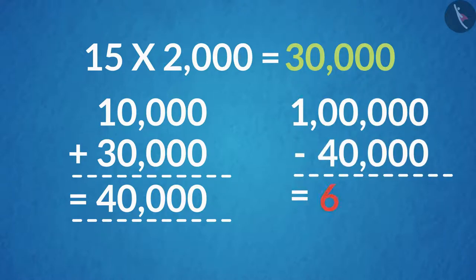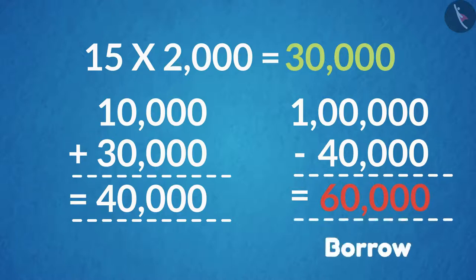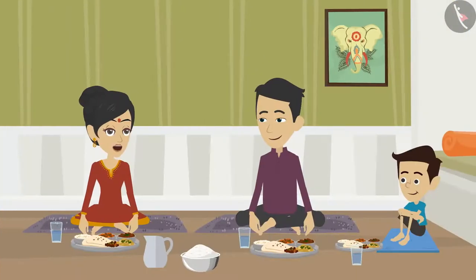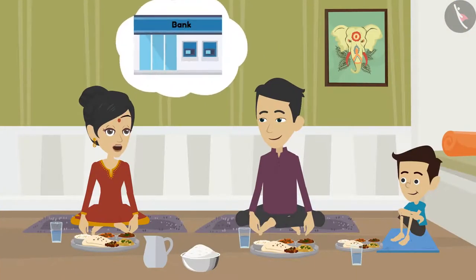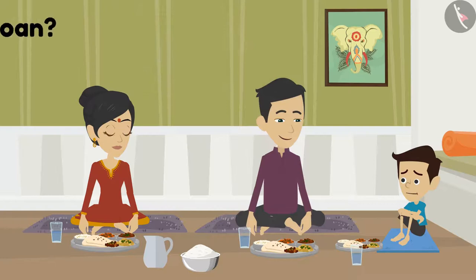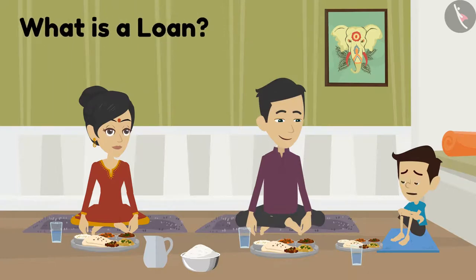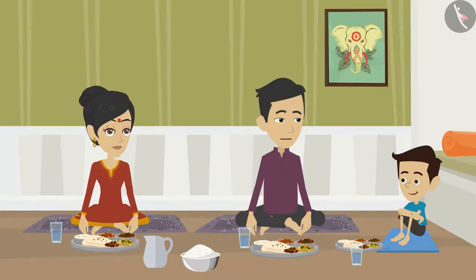That means we have to borrow 60,000 rupees from somewhere. Why don't we take a loan from the bank? But we have to pay interest on that money. Yes, of course we have to pay, but we can pay it when we start making a profit. Dad, what is a loan? Why will the bank give us a loan?